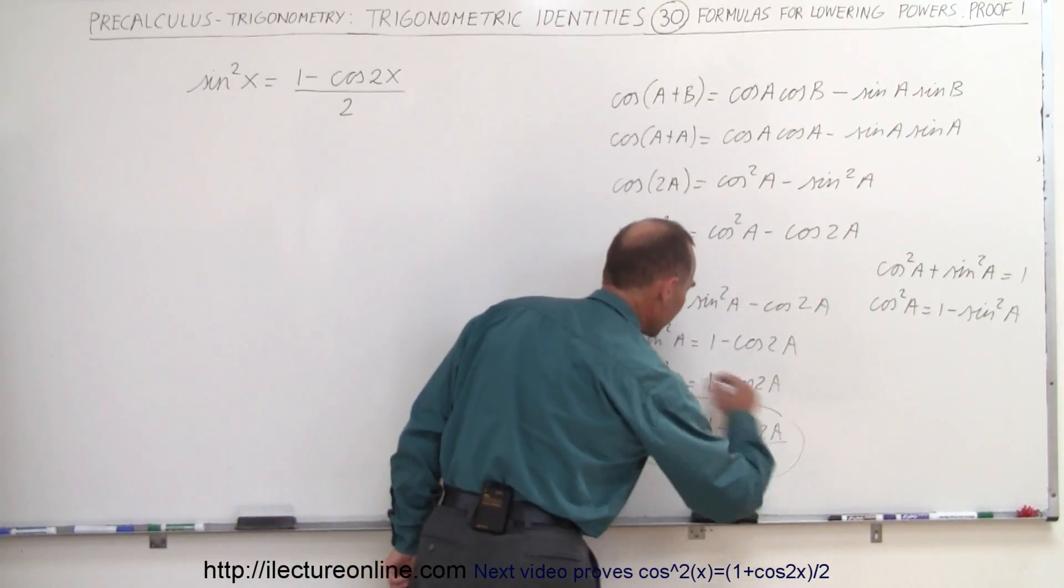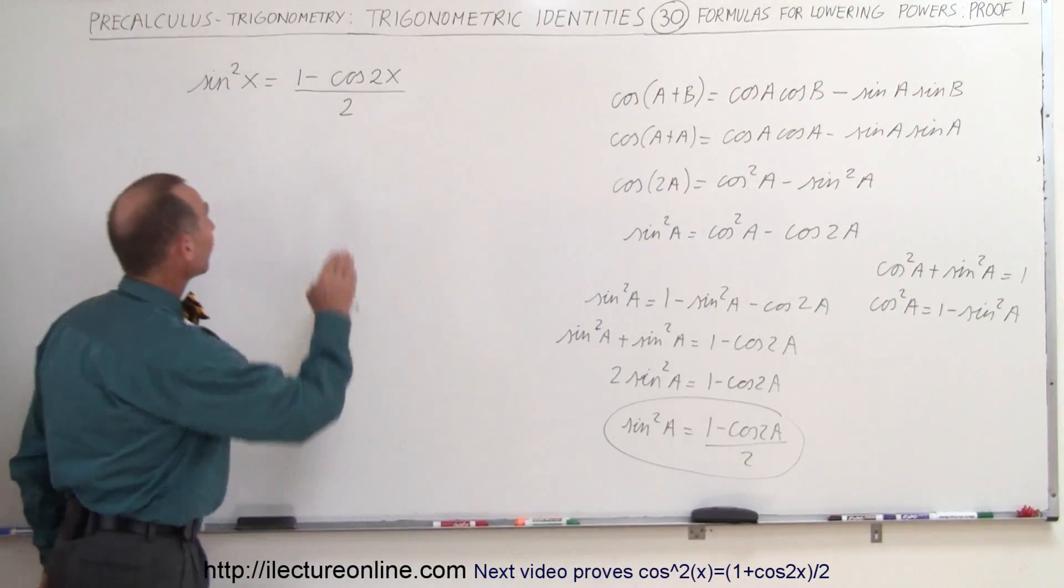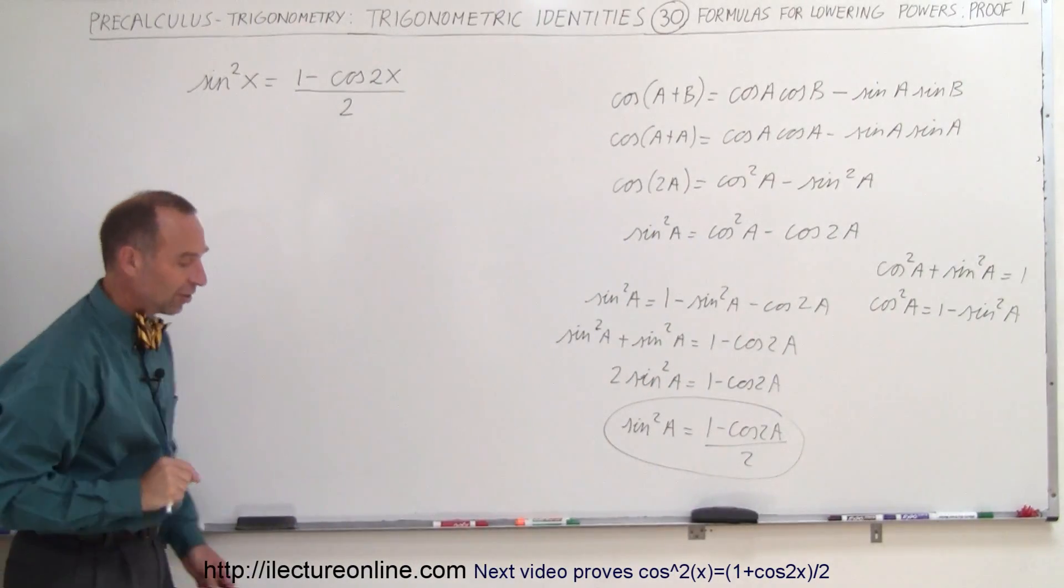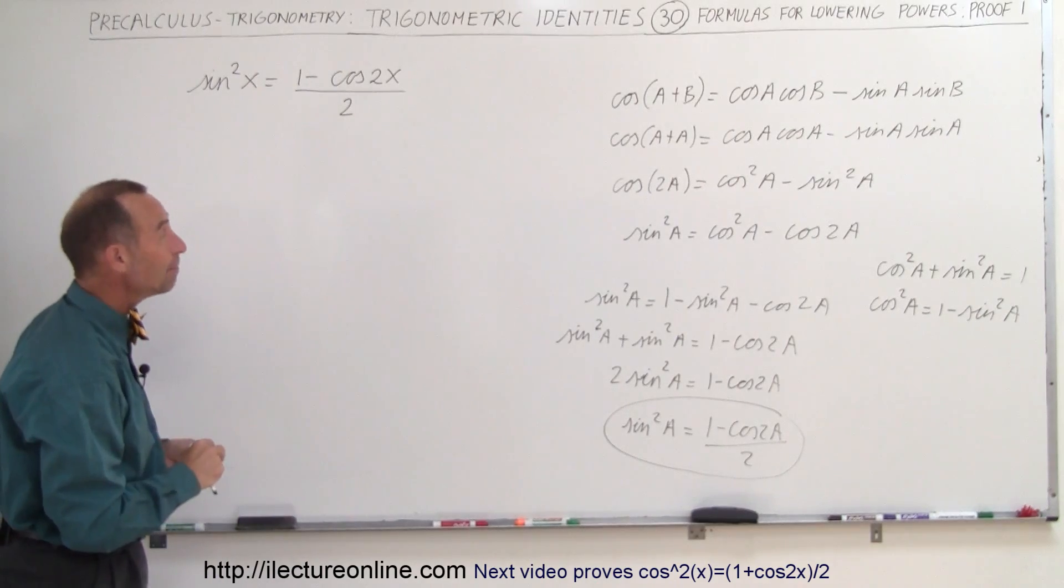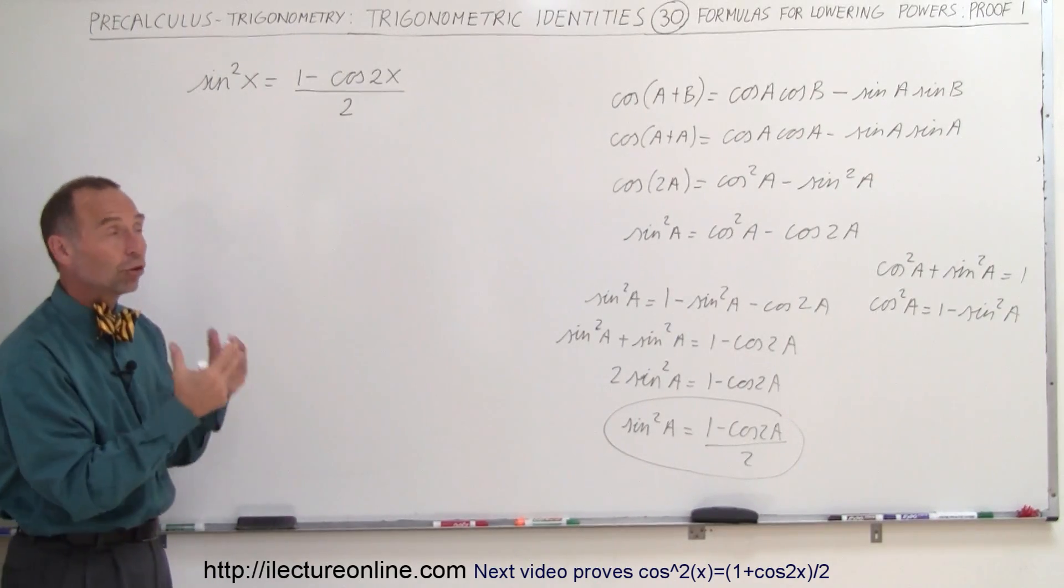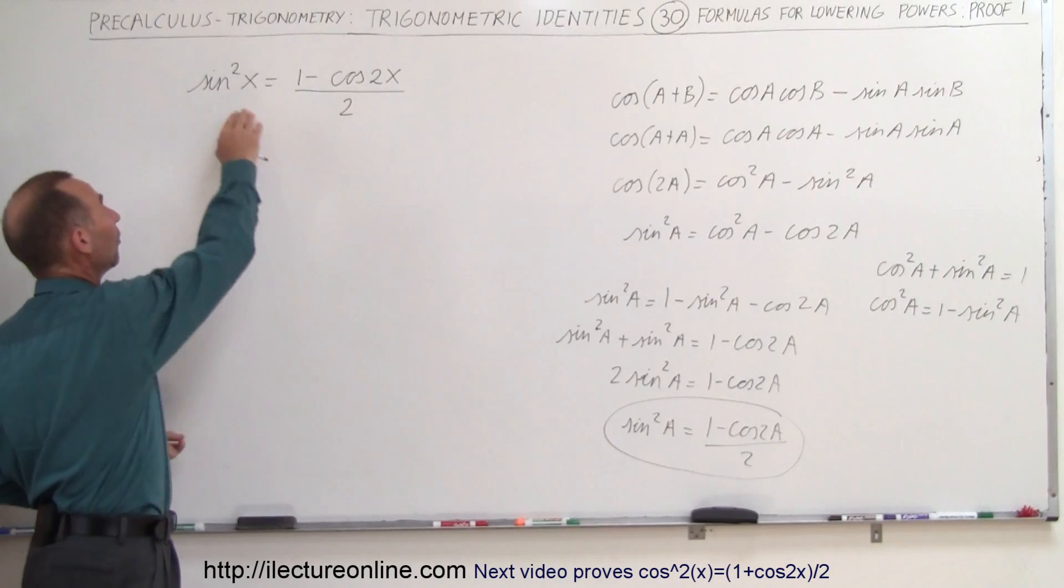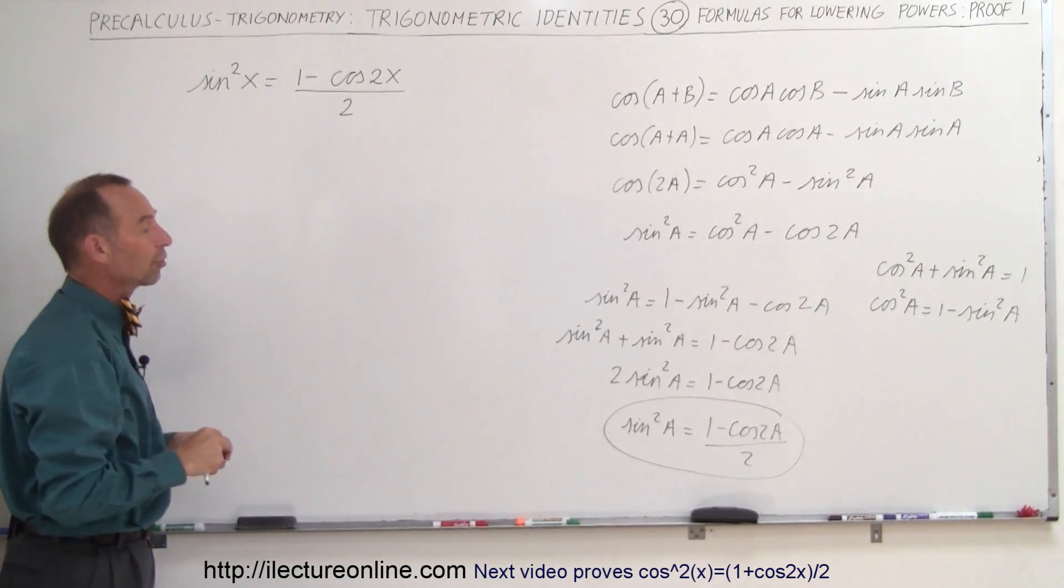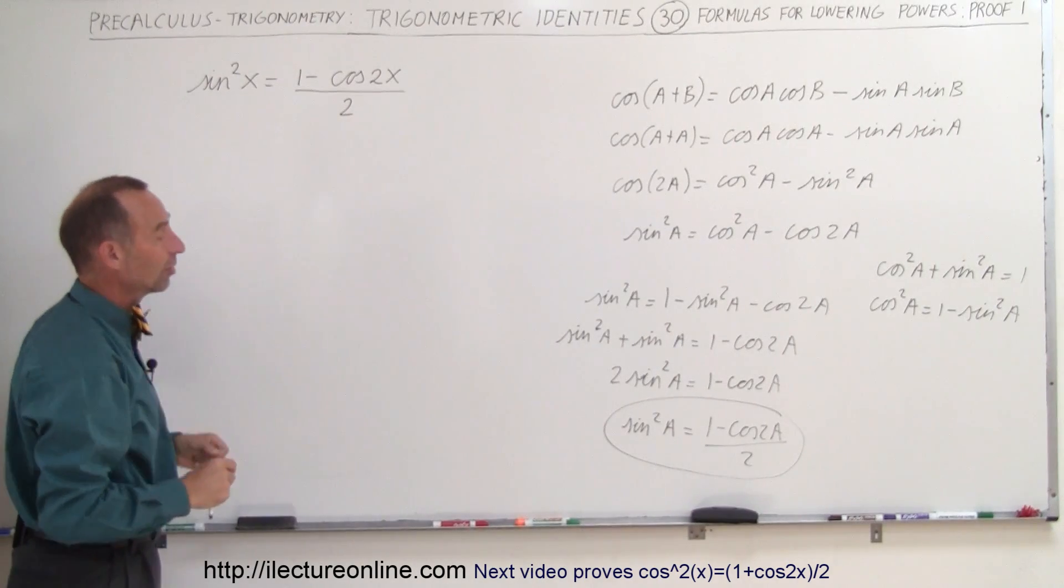And that's the formula that we have over here. It looks exactly the same, except we used X instead of A. And of course, that's the formula that we use to lower the power for the sine function or the cosine function. In this case, it's for the sine function.